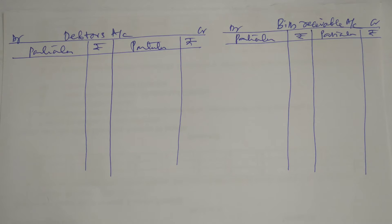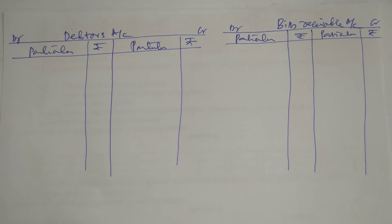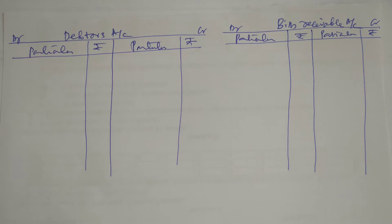In this problem, we have to calculate total sales. Total sales can be calculated by preparing total bills receivable account and total debtors account. Let us solve this problem based on the details given.